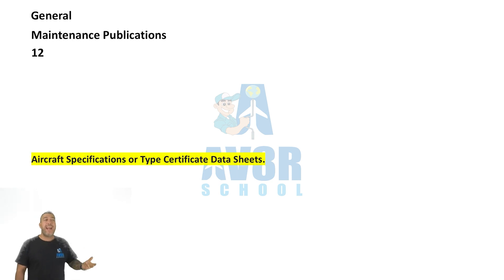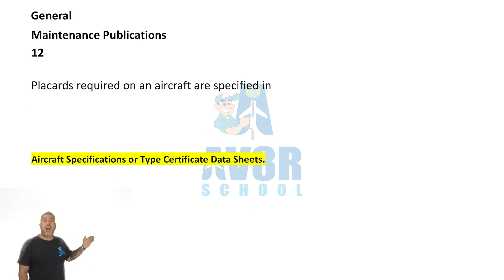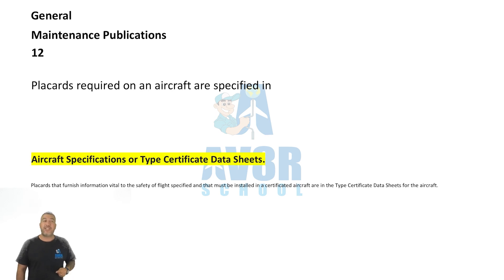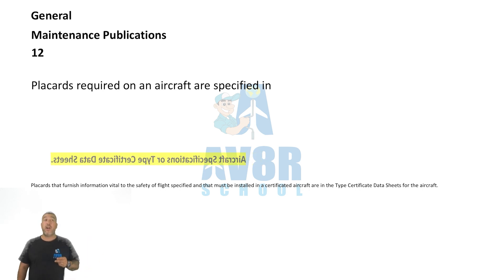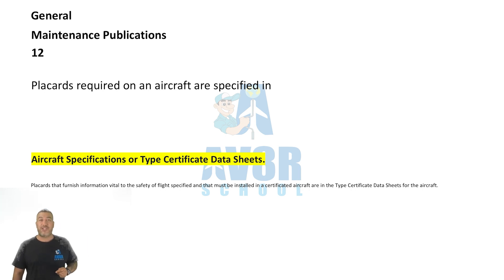Number 12. Placards required on an aircraft are specified in the aircraft specifications or type certificate data sheets.